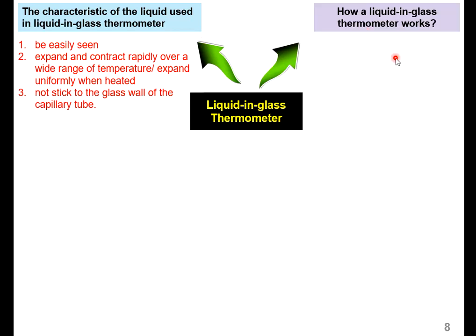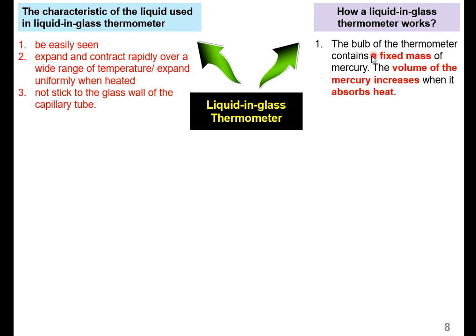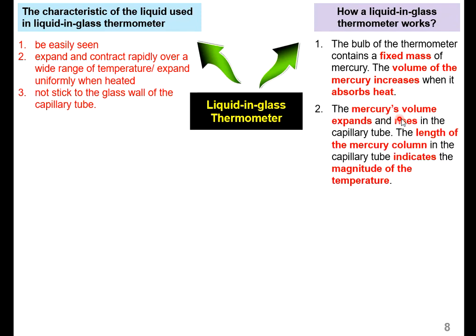How does the liquid-in-glass thermometer work? It uses thermal equilibrium. The bulb of the thermometer contains a fixed mass of mercury. The volume of the mercury increases when it absorbs heat — the mercury's volume expands and rises in the capillary tube. The length of the mercury column in the capillary tube indicates the magnitude of temperature. Many students say the length expands, but it is actually the mercury's volume that expands.